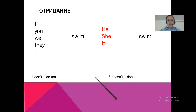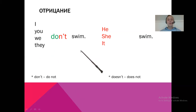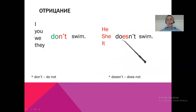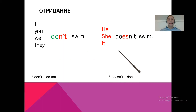И отрицание. Как у нас строится отрицание? Как мы говорили — I don't like. То же самое с другими глаголами: I don't swim, you don't swim, we don't swim, they don't swim. Don't — это сокращённо от do not; not — отрицательная частица. Я не плаваю, ты не плаваешь, мы не плаваем, они не плавают. He, she, it — doesn't swim. He doesn't swim, she doesn't swim, it doesn't swim. Doesn't — это does not. Он не плавает, она не плавает, собака, например, не плавает.